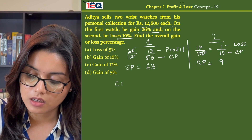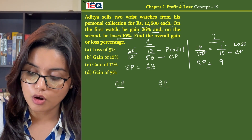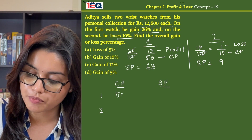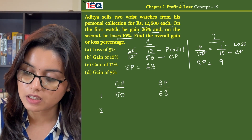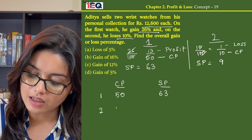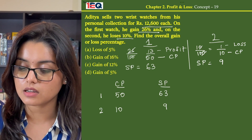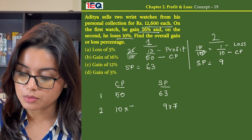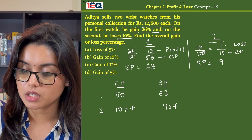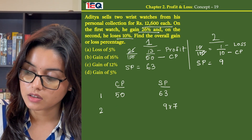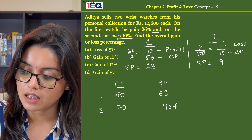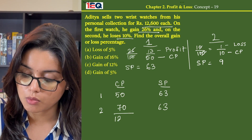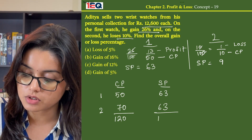Writing it in a clearer format — cost price and selling price of watch 1 and watch 2. Cost price of watch 1 is 50 and its selling price is 63. Cost price of watch 2 is 10 and its selling price is 9. Since the selling price has to be equal, we multiply the cost price and selling price of watch 2 by 7, giving a cost price of 70 and selling price of 63. Total cost price now becomes 120 whereas total selling price becomes 126.